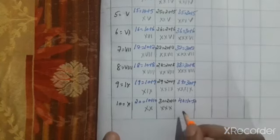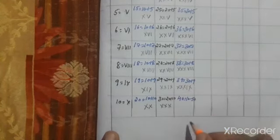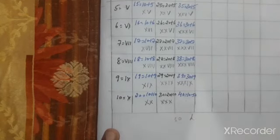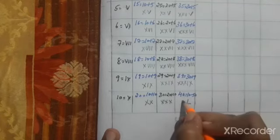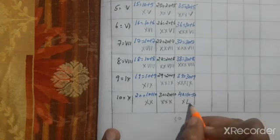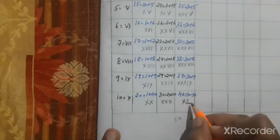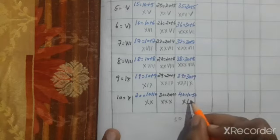For 40, we cannot write X four times. We need the next number, which is 50 — L. L minus 10 means XL. Write X on the left side of L; since L is the greater letter on the right side, we subtract: 50 minus 10 equals 40. So 40 is written as XL.